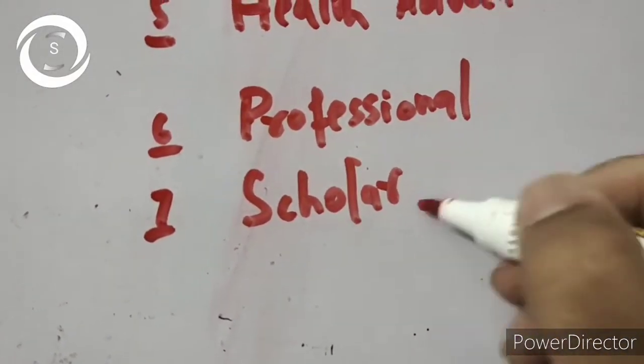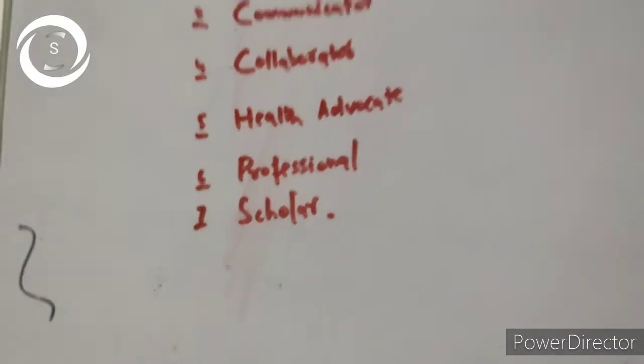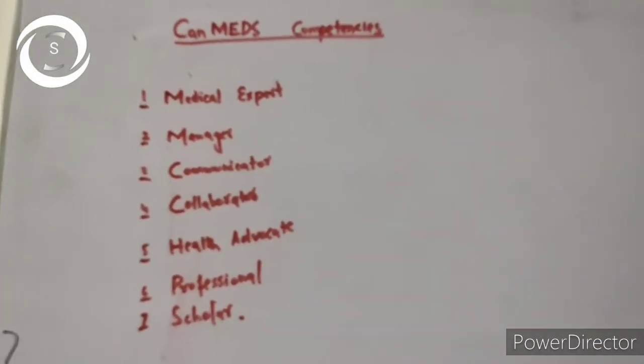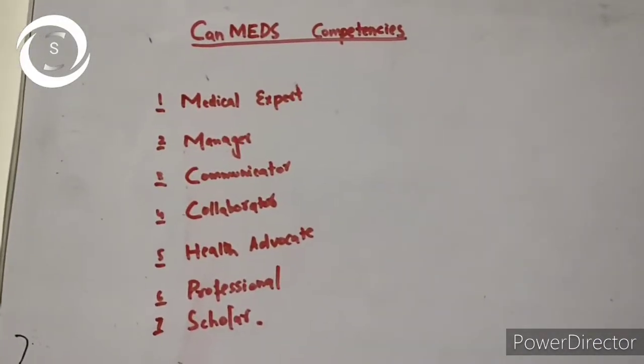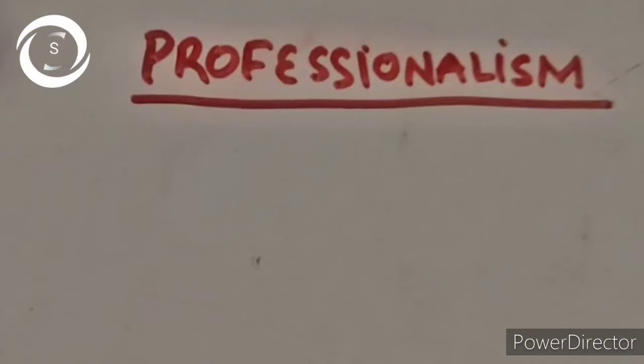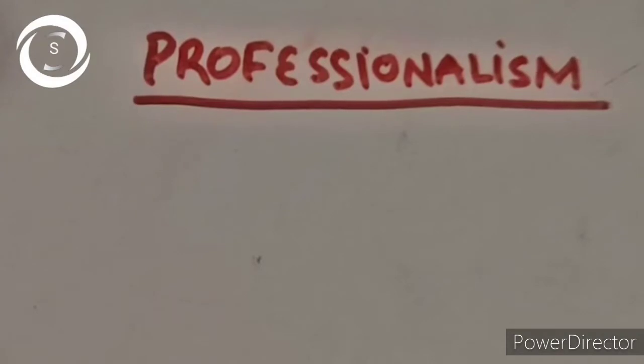They should be professional and perform research as a scholar. These are the seven competencies that are a must for a doctor. Today we will discuss professionalism because in my opinion, all the qualities of a seven-star doctor come under the heading of professionalism.